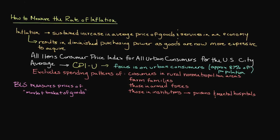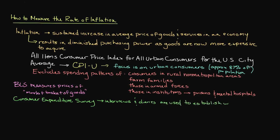In order to determine what should be included in this market basket of goods, the Bureau of Labor Statistics conducts a consumer expenditure survey. The most recent survey took place from 2009 to 2010. A total of 7,000 families were interviewed each quarter during this time period regarding their spending habits. Another 7,000 families were asked to keep a detailed diary cataloging their purchases for a two-week period. These diaries and quarterly interviews were then used to determine the importance of more than 200 item categories used in the CPIU index structure.